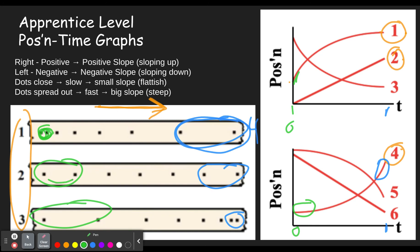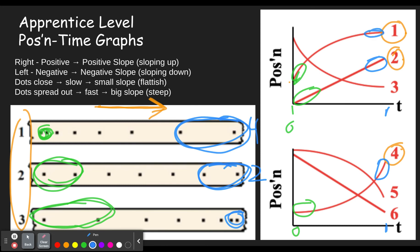Next, dot diagram two starts out going medium speed and continues medium speed the whole way — the same distance the whole way across — so we're looking for a straight line sloped up. Graph two starts out medium speed and continues medium speed the entire way, so this is number two. Finally, dot diagram three starts out going very fast — a steep line — and ends up going quite slow, a fairly flat line. So this is number one.